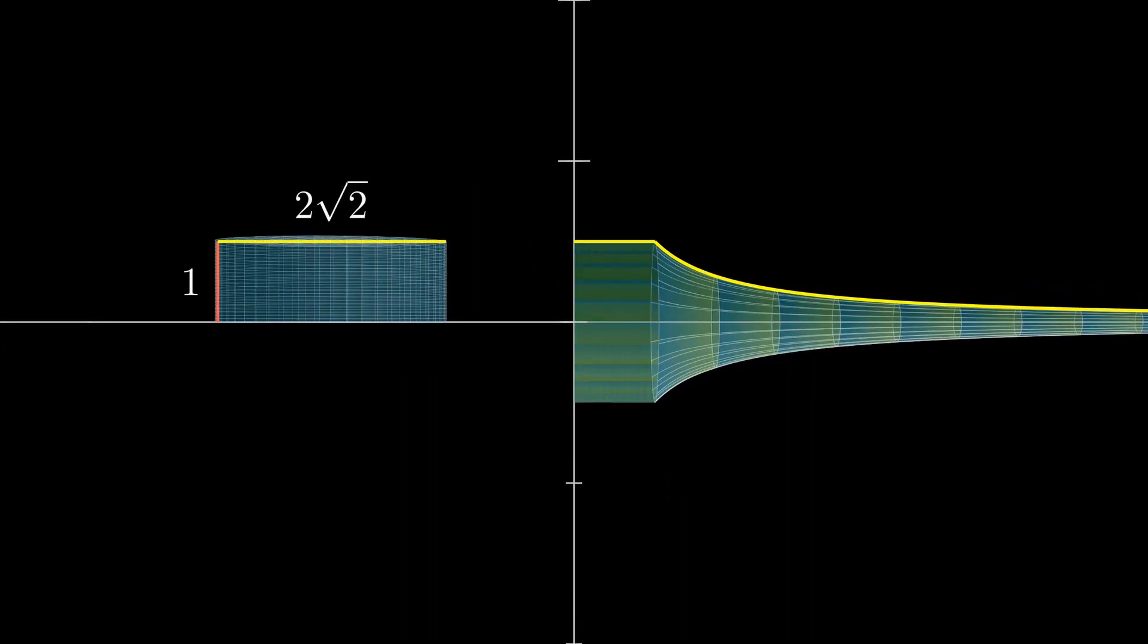By construction, the area of the section at any height in this cylinder is 2 pi. Consider any line at a height h less than 1 from the x-axis. This line intersects the curve at the point 1 by h, h.